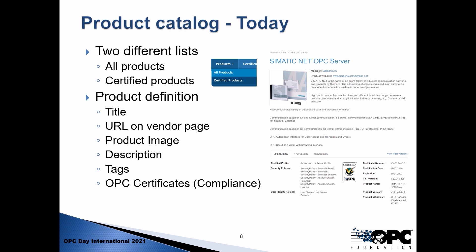The way the product catalog is used today is that we have two different lists: one where you find all the products in the catalog, and one where you will only find certified products. A product definition right now has just a minor set of information like a title, URL, product image, some descriptions, but also the OPC certificate information — so everything that is about compliance. This was very valid when the product catalog was designed, but now we are receiving more demands from end users on this behalf.